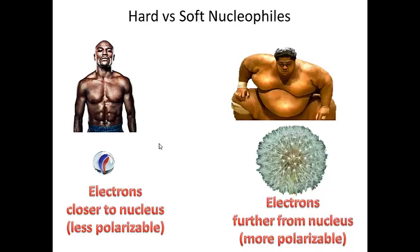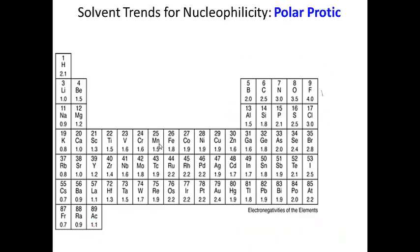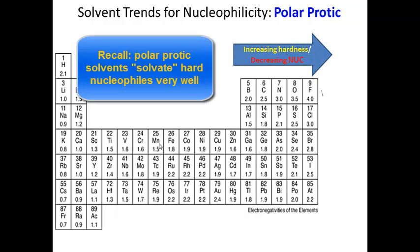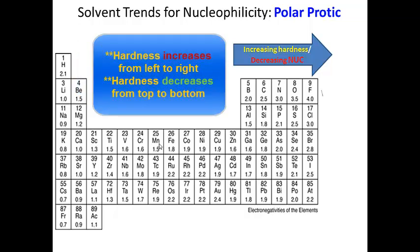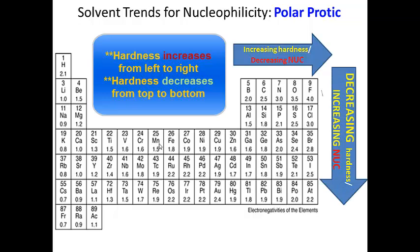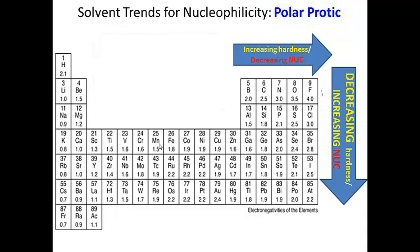Polar protic solvents solvate hard nucleophiles. Going from left to right, the nucleophile becomes harder, and nucleophilicity decreases — because as you go left to right, atomic radius decreases and hardness increases. Going from top to bottom, you do the exact opposite in polar protic solvents: hardness decreases because atomic radius increases, making the nucleophile bigger and less hard, so nucleophilicity increases.